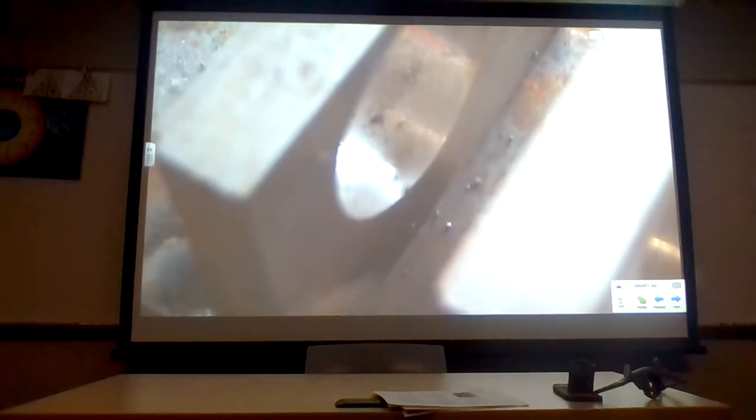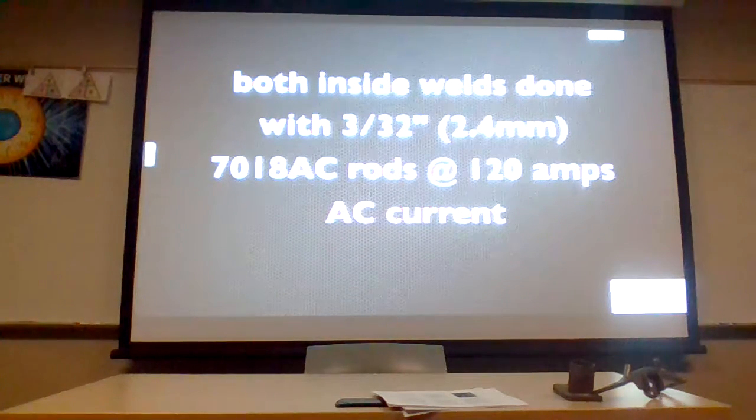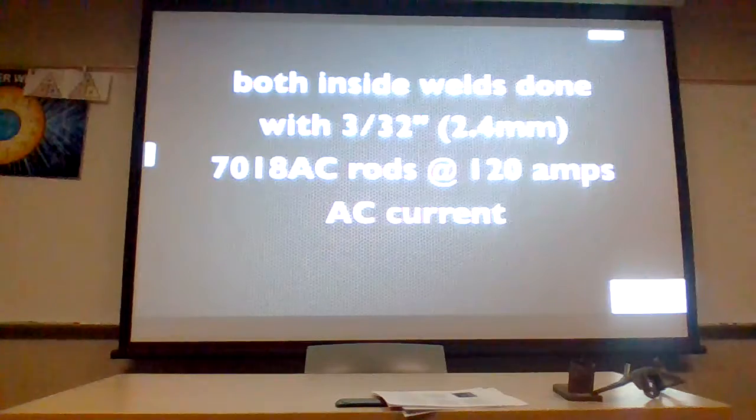On the inside here, I'm going to swap over to that 3/32 7018 AC. These rods are designed to be run on AC. Not all 7018s are. When you're using a buzz box like this, you're better off buying the actual 7018 AC. It's designed and runs a lot smoother. In fact, the other ones will kind of go out on you a lot of times. But on this rod, I've got the same setting, 120 amps. I'm just making very slow movement. It's not really needing to move a whole lot at all. You can just drag it nice and steady. Works fine.